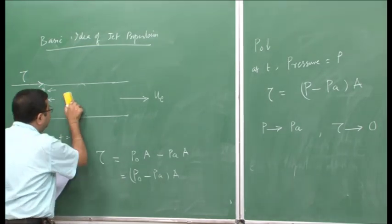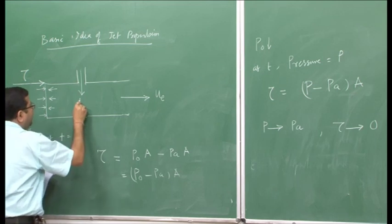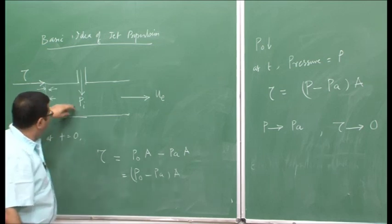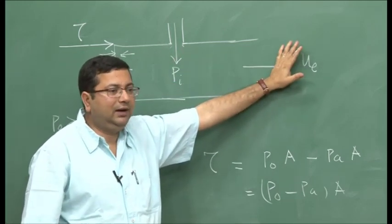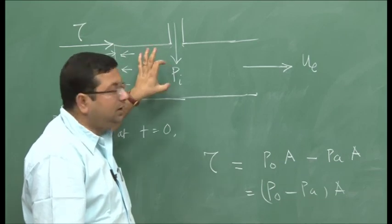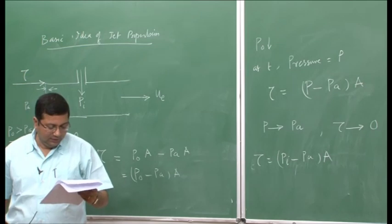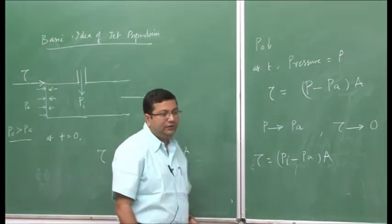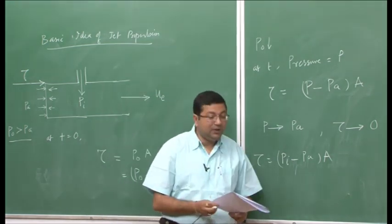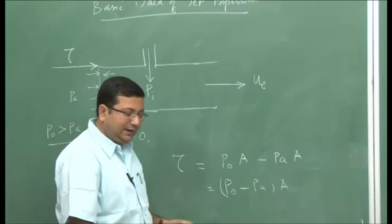By modifying this system, we add a secondary supply of compressed air which can maintain the pressure at P_i. This secondary source supplies air into the system and maintains a high pressure. As long as we maintain this pressure at P_i, we can produce a thrust tau equal to (P_i minus P_a) times A. This shows that if we know the pressure distribution inside the thruster, we can calculate the thrust.